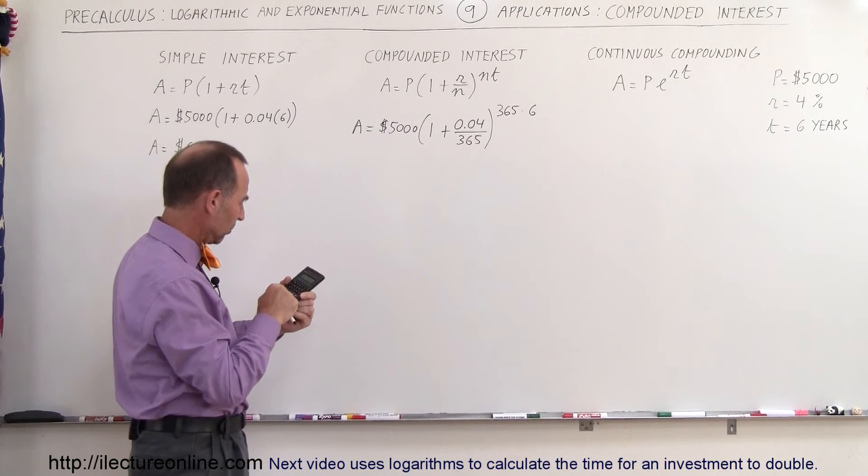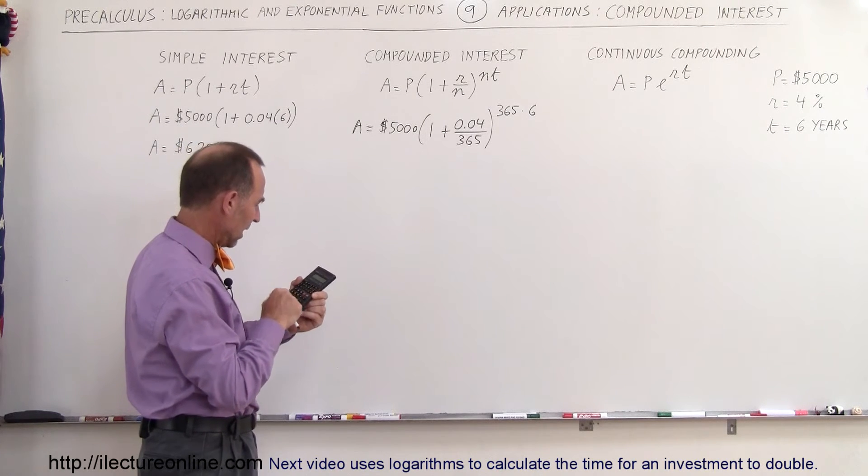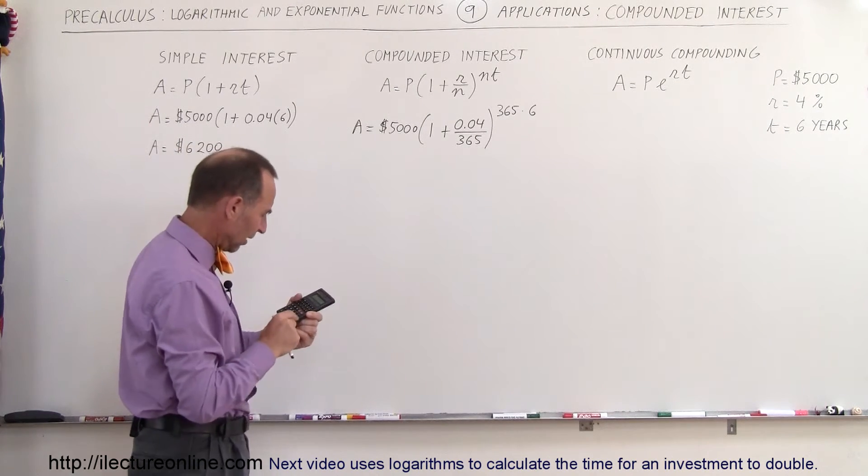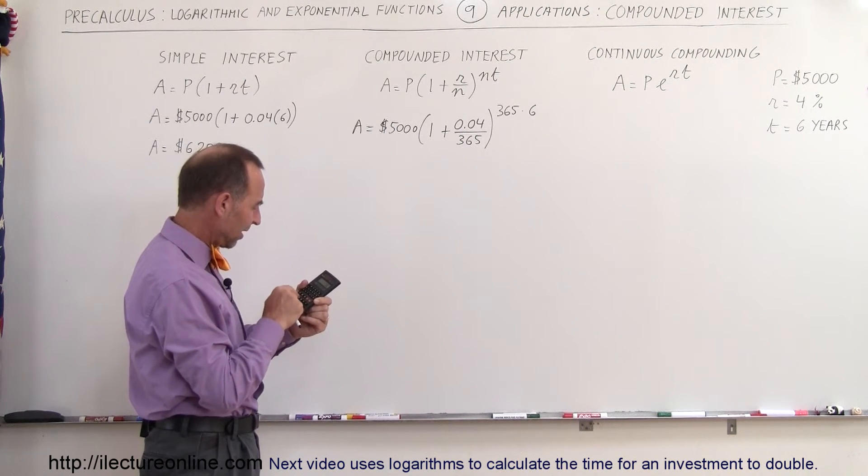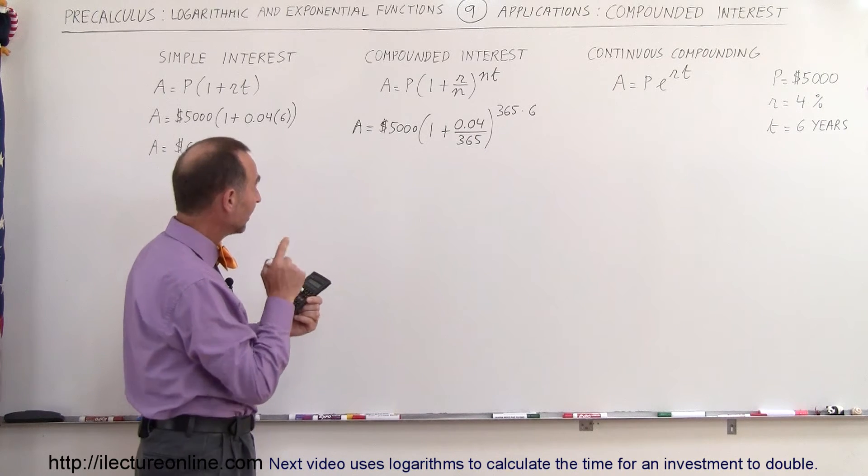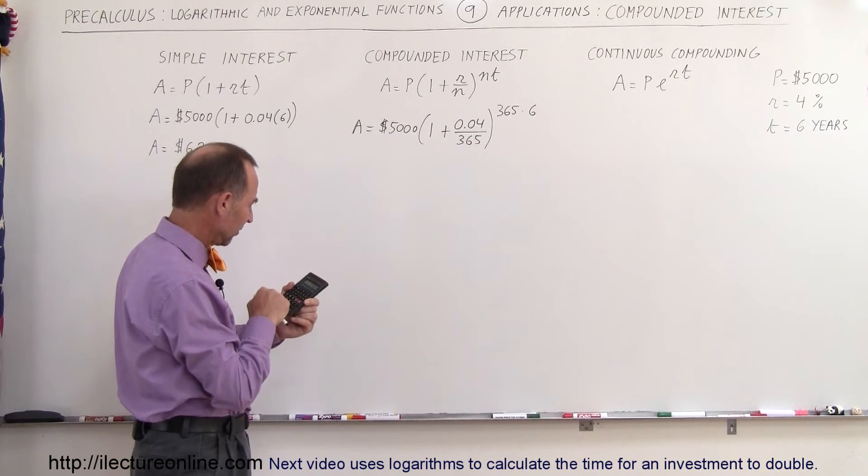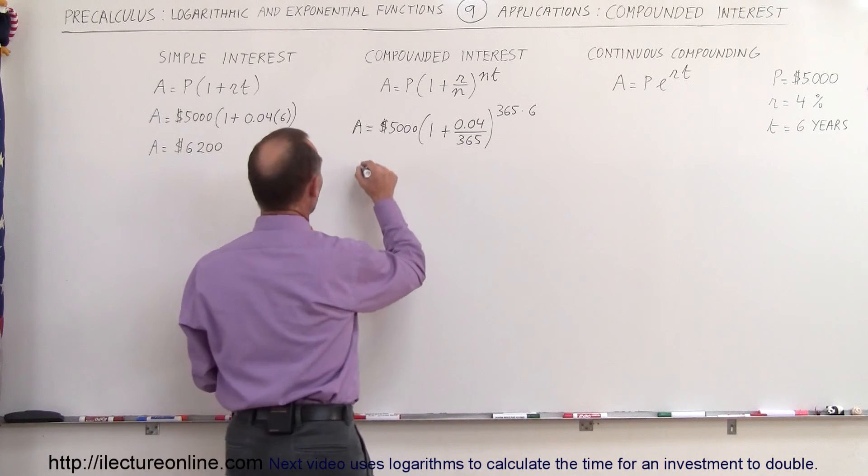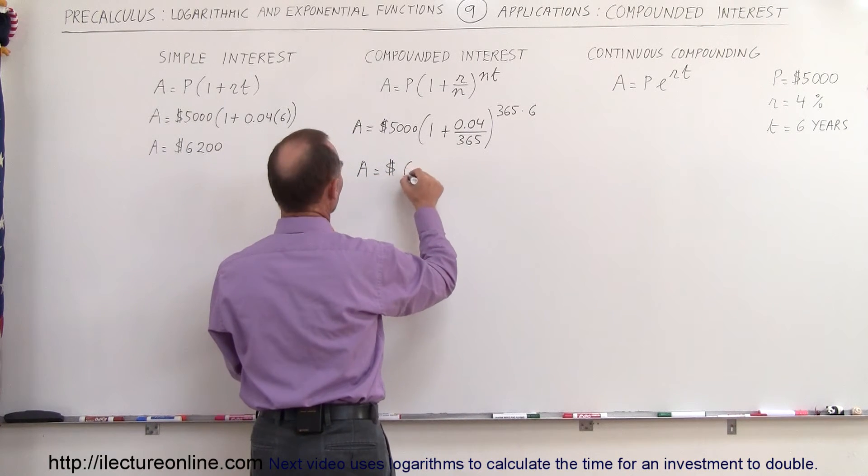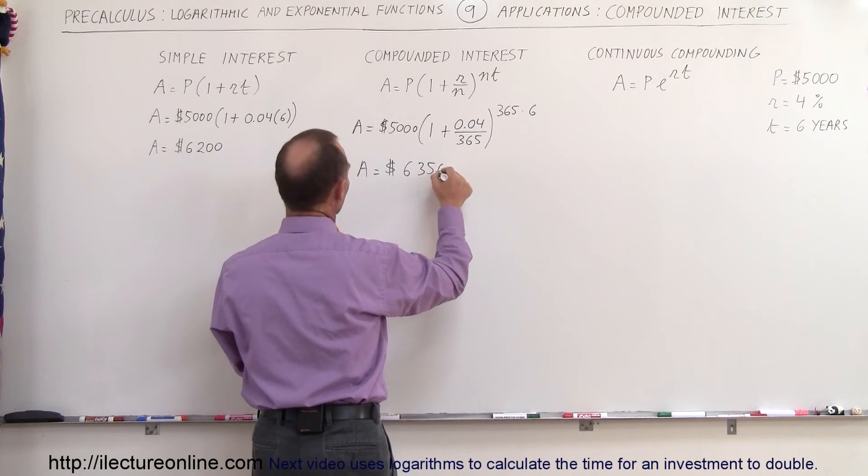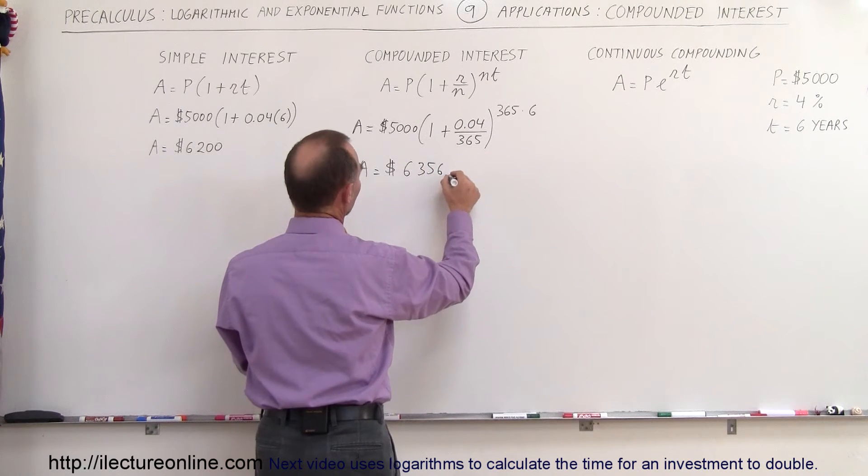So this will give us 0.04 divided by 365, add up to 1, multiply that times... not yet, because first we have to raise the exponent, so raise the exponent, 365 times 6, equals, and then we multiply that times 5,000, equals, and so the amount that you end up with would be equal to $6,356.16.